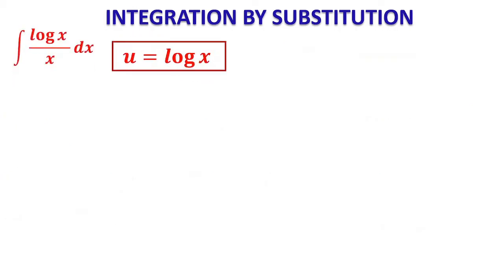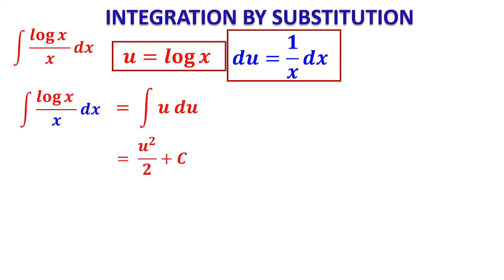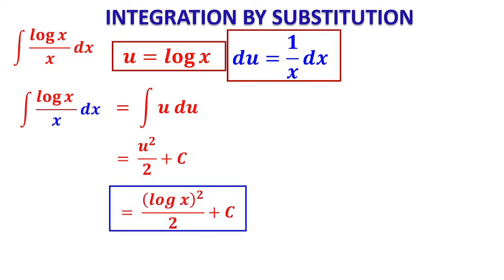For the integral ∫(log x / x)dx, we substitute u = log x, so du = (1/x)dx. Inside the integral sign, log x is replaced by u and dx/x is replaced by du. We then get ∫u du = u²/2 + C. After resubstitution, the answer is (log x)²/2 + C. Step 1: substitution; Step 2: change everything inside the integral sign in terms of the new variable; Step 3: integrate; Step 4: resubstitute.